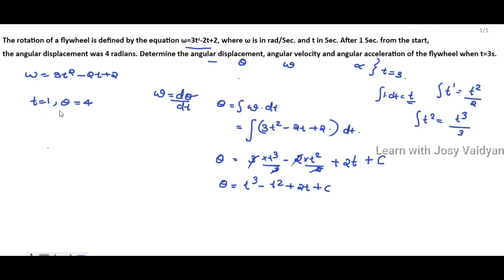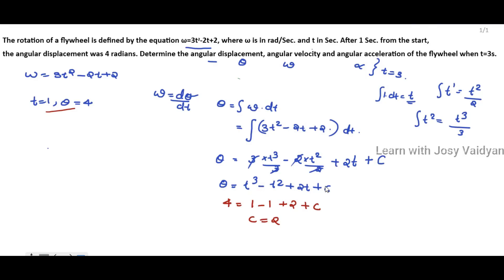Now applying the initial condition: t equals 1 and theta equals 4. Substituting: 1 cubed minus 1 squared plus 2 times 1 plus C equals 4. Solving, C equals 2. So the equation for theta is theta equals t cubed minus t squared plus 2t plus 2.